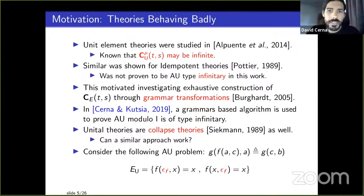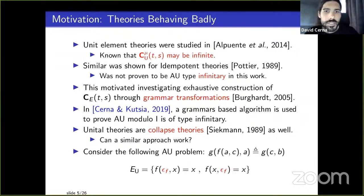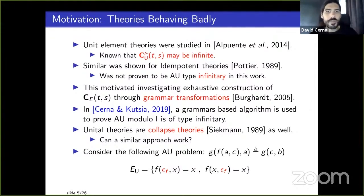These equational theories leading to infinite sets of generalizations motivated work from 2005 on grammar transformations: transforming to a tree grammar to extract a complete set of generalizations — an exhaustive construction. We also used grammars: not a grammar transformation but a grammar-based algorithm, which is how we got an infinitary type for AU modulo idempotency. Both unit element and idempotent are collapsed theories in Siekmann 1989, which motivated trying a similar grammar-based technique.